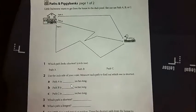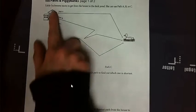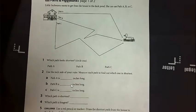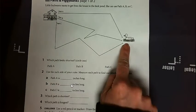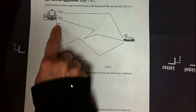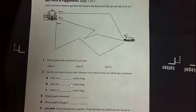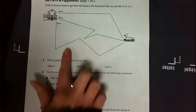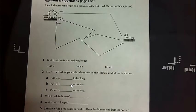All right, boys and girls, so we have Paths and Piggy Banks, page one of two. Our little inchworm wants to get from the house to the duck pond. She can use either path A, B, or C. So here we have our house, we got our duck, and we have path A, path B, and path C. If you notice, the paths didn't take a direct path. So we're going to use this to answer our questions below. You do need your ruler to measure the paths.